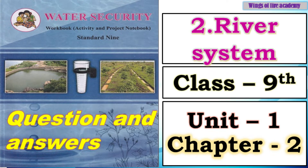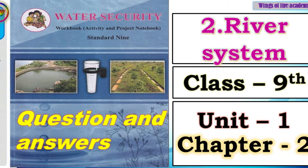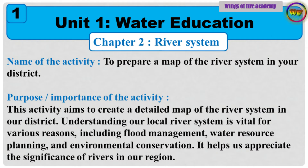Hello dear students. Today we will solve Class 9th Water Security Workbook, Unit 1, Chapter 2 — River System questions. So let's start. The name of the activity is: to prepare a map of the river system in your district.